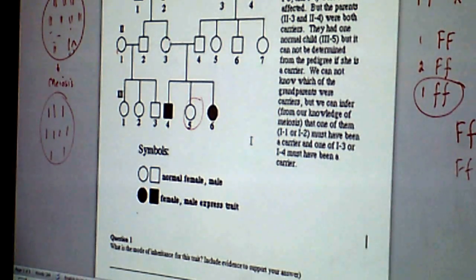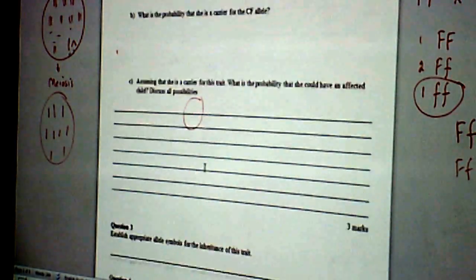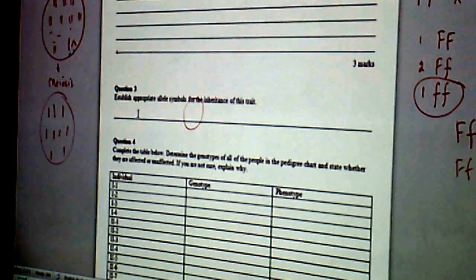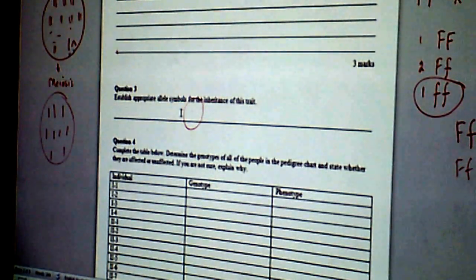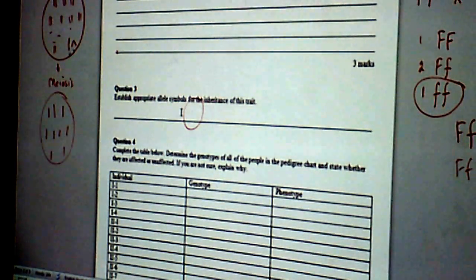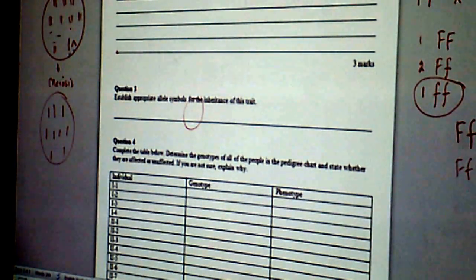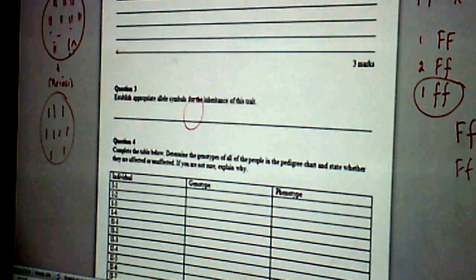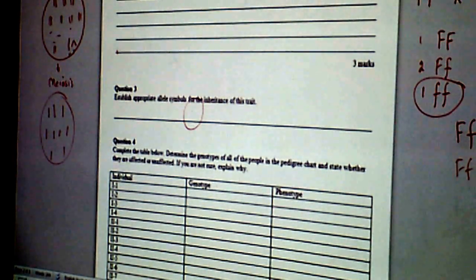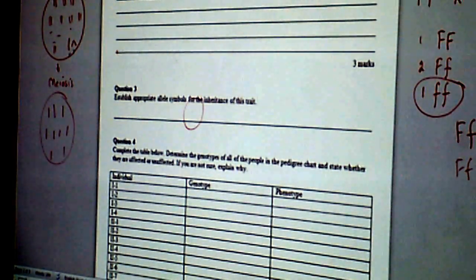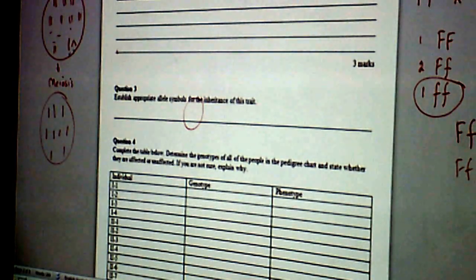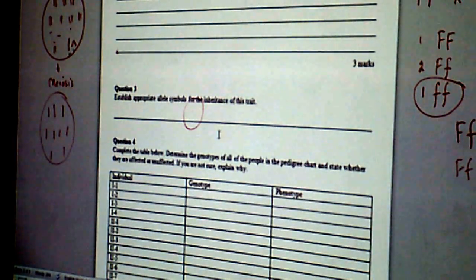The next part of the question says establish appropriate allele symbols. So what symbols have we put in over here? The F and f. So we'll say capital F is the symbol for a person who's not affected and lowercase f is the symbol for a person who is affected. So this part of the question would have F and f as an answer.